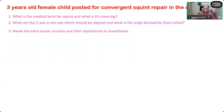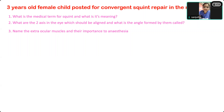What do they form by their origin and insertion over the globe? They are attached to the eyeball or globe and go and get attached to the posterior part of the orbit. These muscles form what is called the muscular cone - to hold the globe in position.